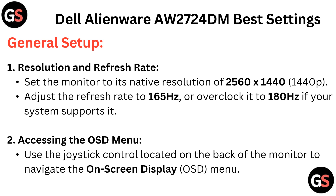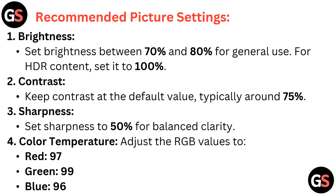To access the OSD menu, use the joystick control located on the back of the monitor to navigate the on-screen display. For recommended picture settings, set brightness between 70 and 80% for general use.